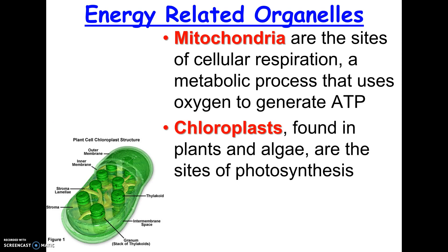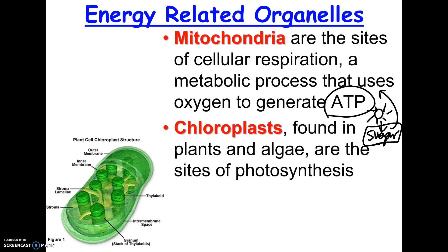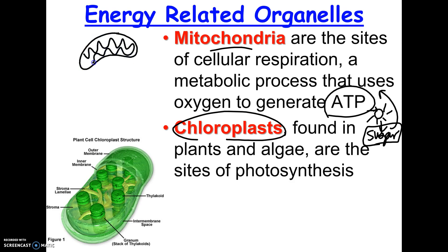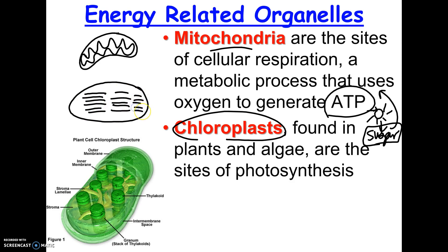Chloroplasts look different than mitochondria. They are found only in plants and some algae, and they are the sites of photosynthesis. In photosynthesis, energy from sunlight is captured into sugar. Then in the mitochondria, that sugar is broken down into carbon dioxide and water, generating ATP. So there is a relationship between chloroplasts and mitochondria — plants make their own sugar, whereas animals have to eat theirs, but both have mitochondria. In a two-dimensional picture, mitochondria look like a bean shape with a squiggly inside, while chloroplasts are a little fatter with stacks inside.